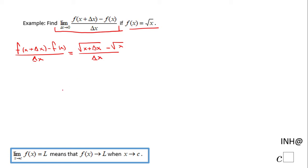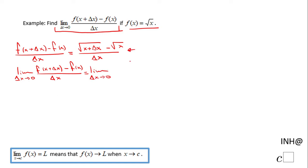Now let's go into the limit process. We have the limit as delta x approaches zero of f of x plus delta x minus f of x over delta x, which equals the limit as delta x approaches zero of square root of x plus delta x minus square root of x, over delta x. If you replace delta x with zero in this expression you get what we call an indeterminate form: zero over zero. So obviously we have to do some algebraic steps to solve this limit.